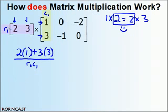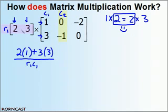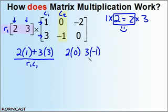To recap: multiplying row 1 times column 1 gives one element at row 1, column 1. Now we mosey over to column 2. Again, we multiply the first element in row 1 by the first element in column 2 — so 2 times 0 — then the second element times the second — 3 times negative 1. We add those two products together to get the element at row 1, column 2.